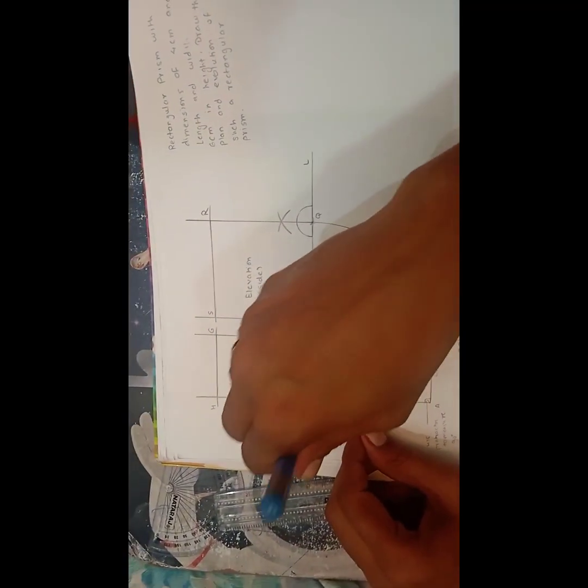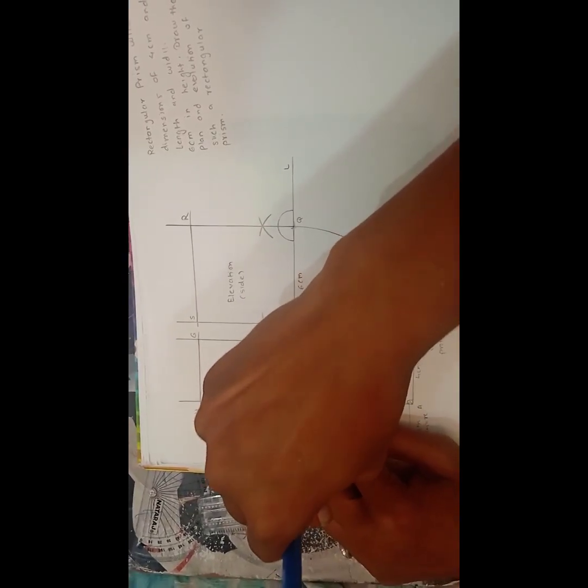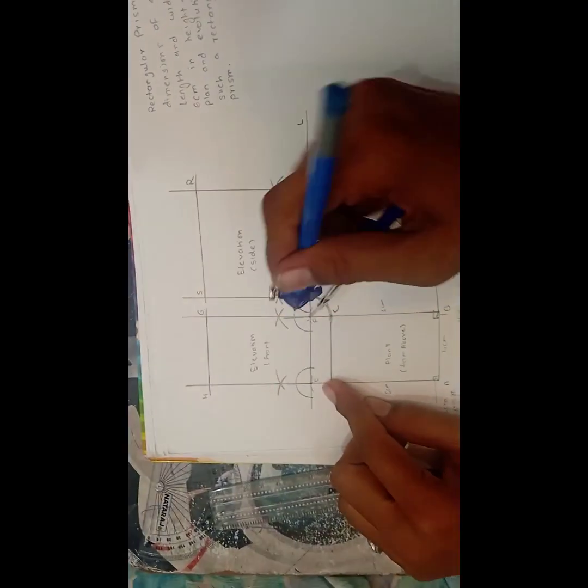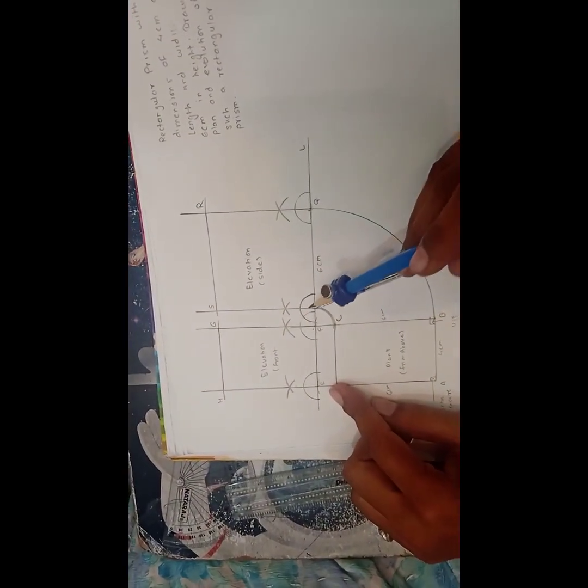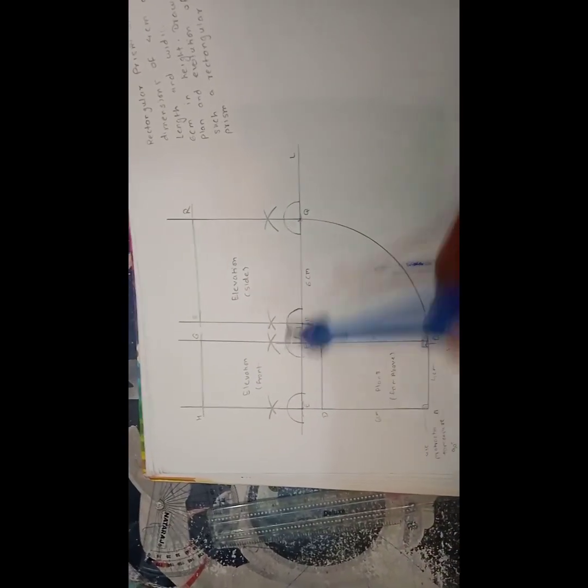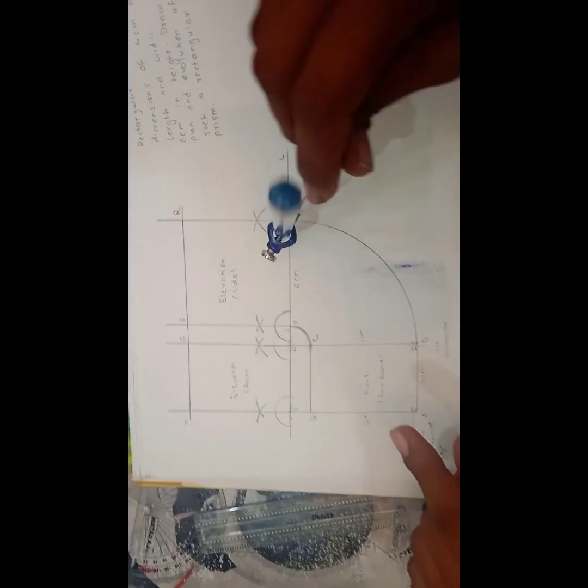Again make a semicircle. Keeping the same distance again on the point F make a semicircle. Keeping the distance same again on the point P make a semicircle. And again point on the Q make a semicircle.